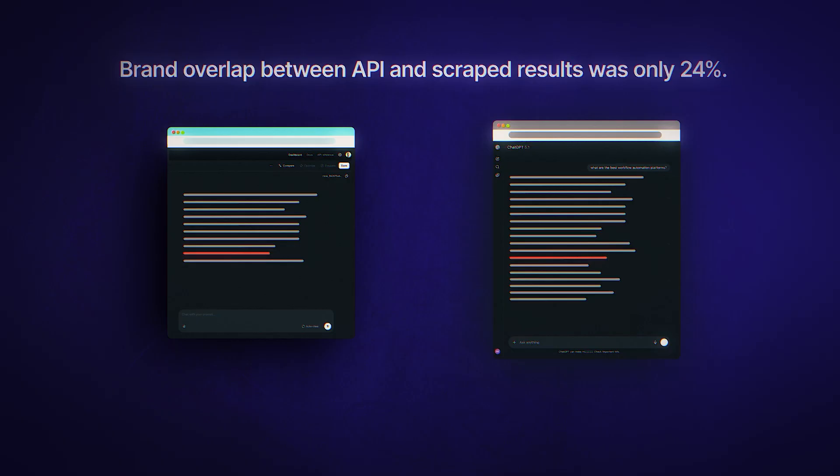Second, if you're tracking brand mentions via API, you're seeing a distorted picture. There's only 24% brand overlap in ChatGPT, meaning 3 out of 4 brands that show up in real answers are invisible in your API-based reports. You might think you're losing to competitor A when competitor B is actually dominating the real results, or you might not think you're showing up at all when you're actually getting mentioned a ton — it's just not in the data you're looking at.